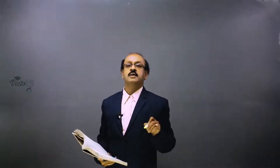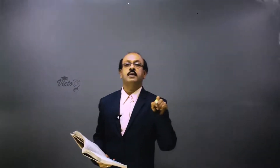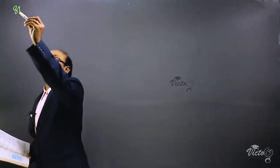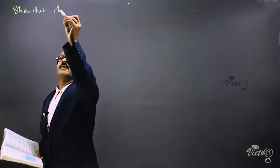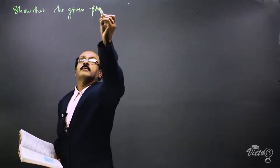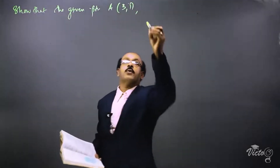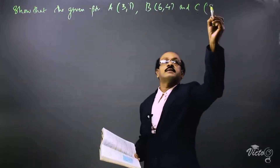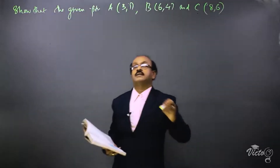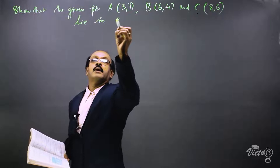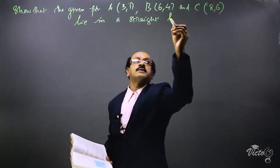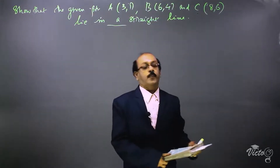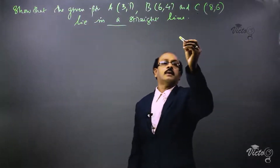The next question we are going to solve: we are given three points A(3,1), B(6,4), and C(8,6), and we have to show that they lie in a straight line.